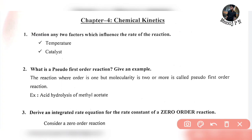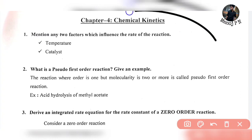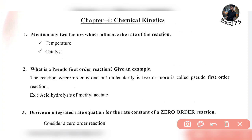Mention any two factors which influence the rate of reaction. See, the first factor is temperature — temperature will affect everything, so mention temperature at any cost. The rate of reaction depends on temperature. The second factor is catalyst — it depends on the catalyst. If it is a good catalyst, you can speed up the reaction; you can also inhibit the reaction.